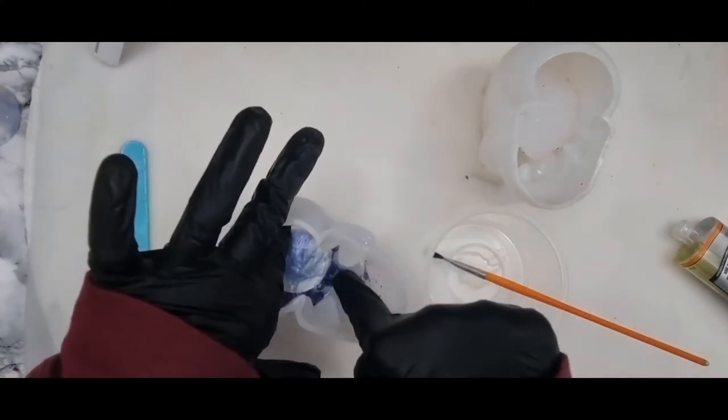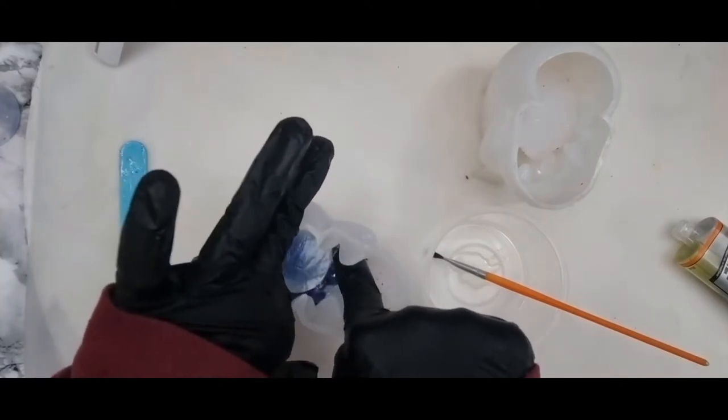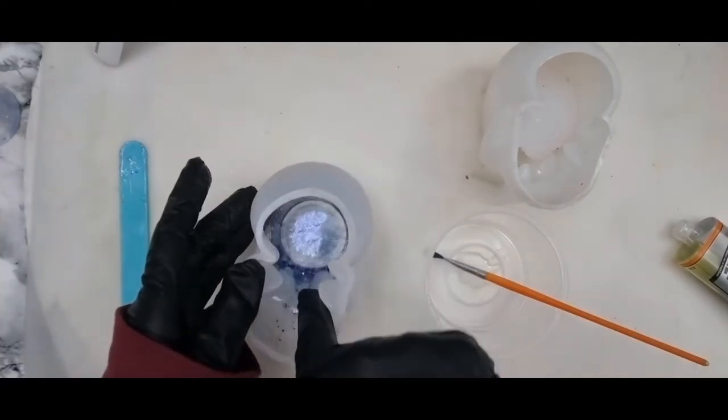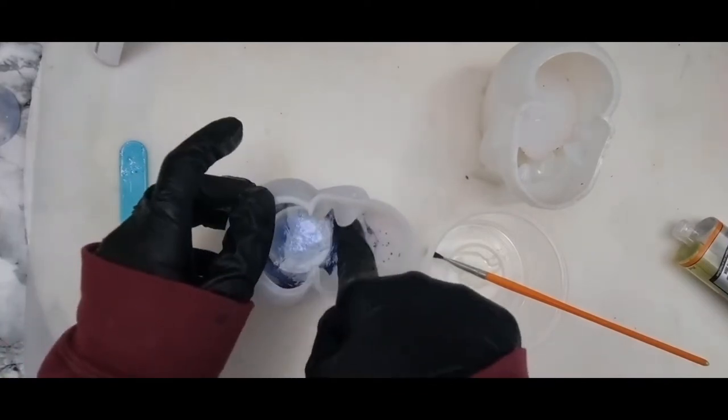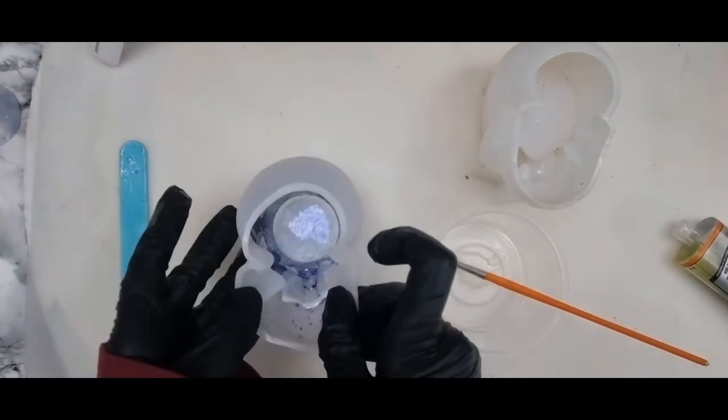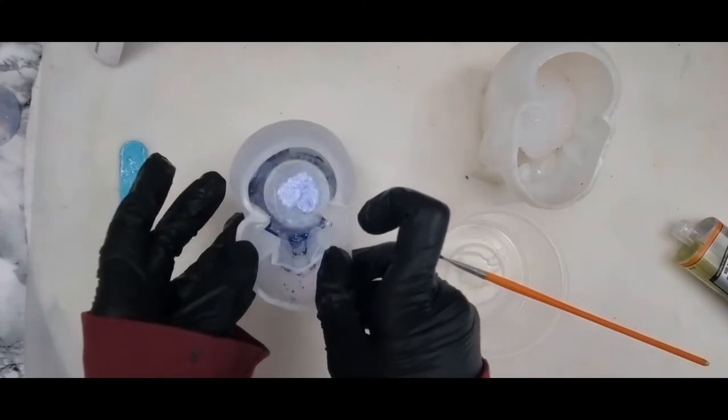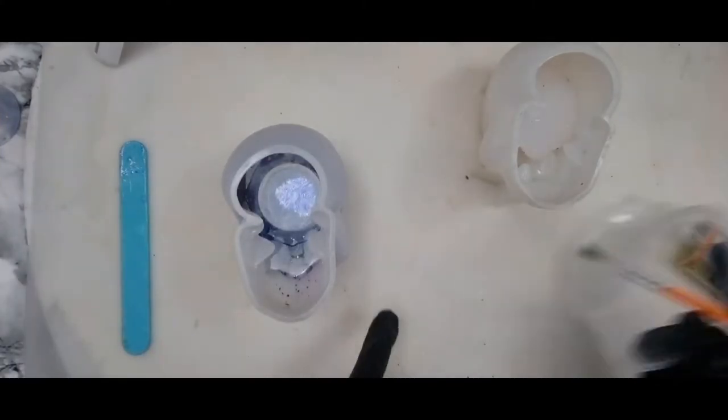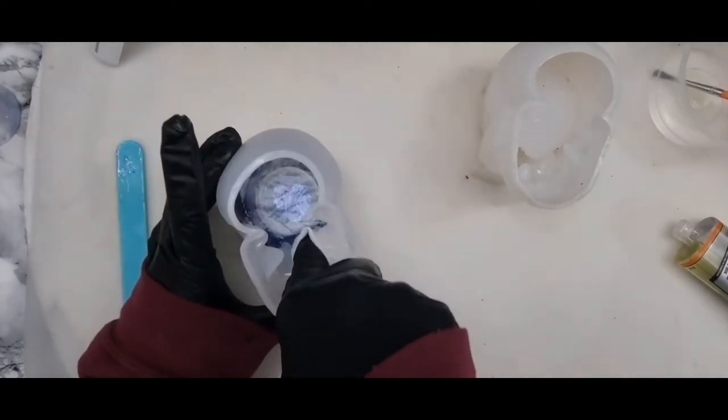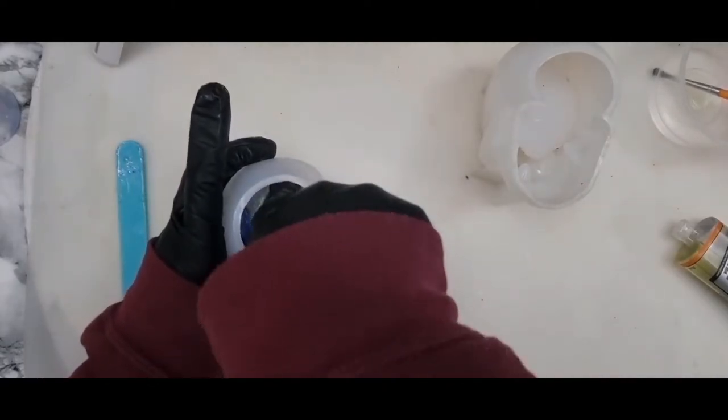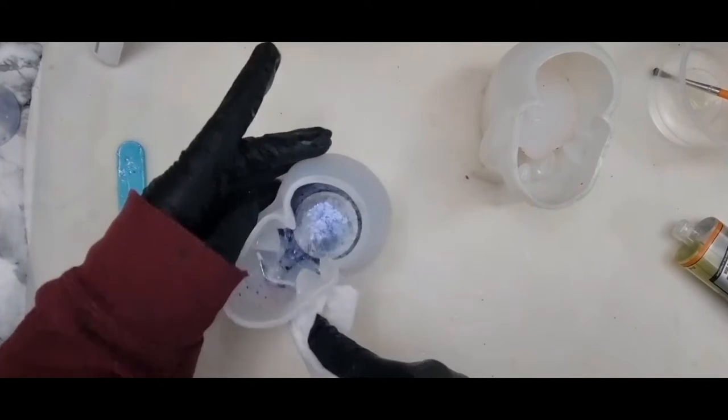This is just making sure that all the edging is sealed and there's no way that resin can seep underneath the film. I've got a small wipe here and I'm just going around the edge to make sure that it's fully dry and pressing it down to make sure it's secure.